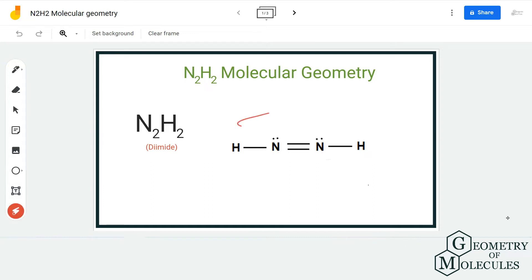We'll also determine which atom we will consider as the central atom over here. So as you can see, there are two nitrogen atoms that are sharing a double bond, and both these atoms have a lone pair of electrons.